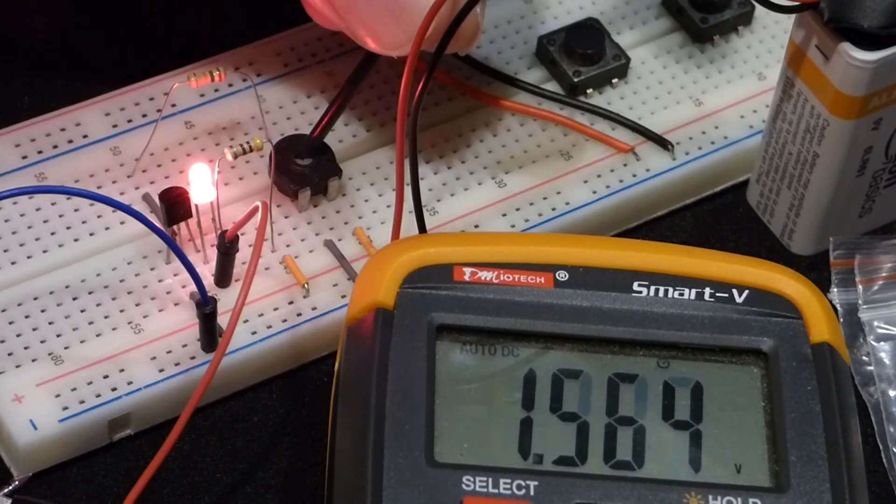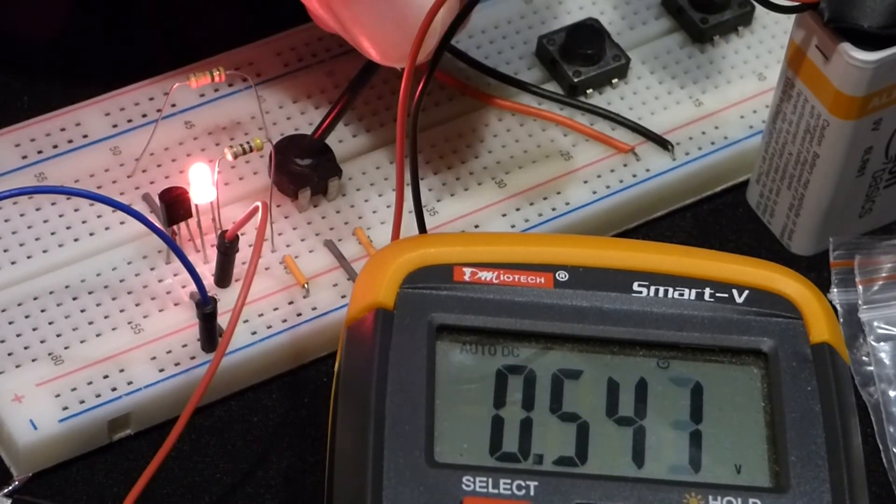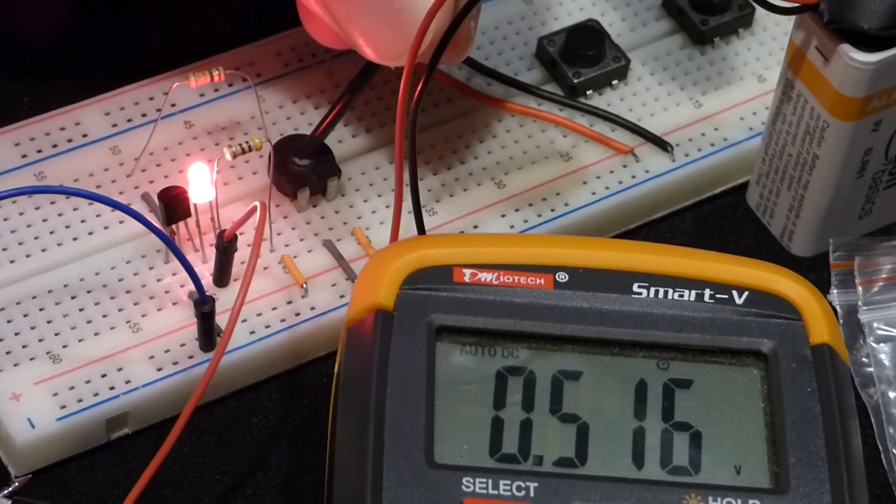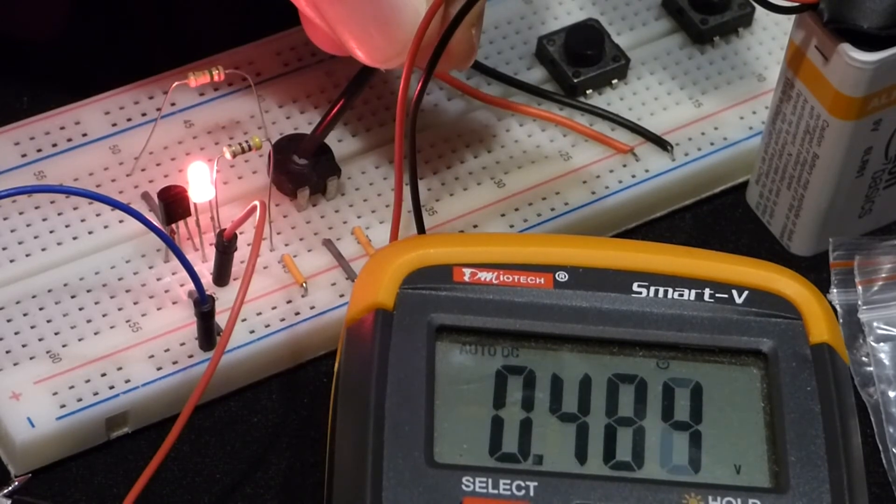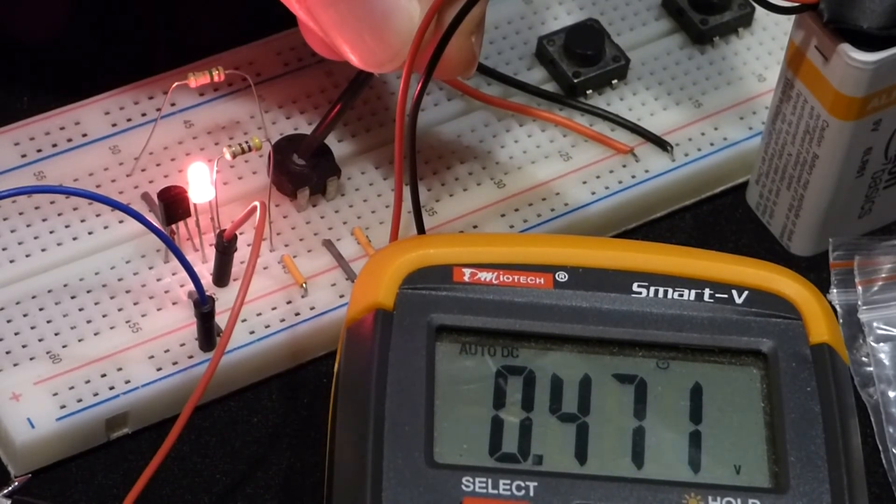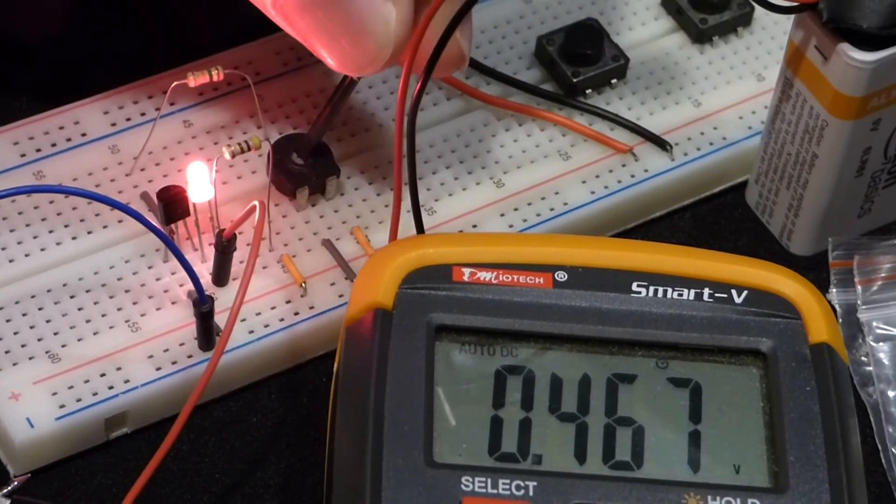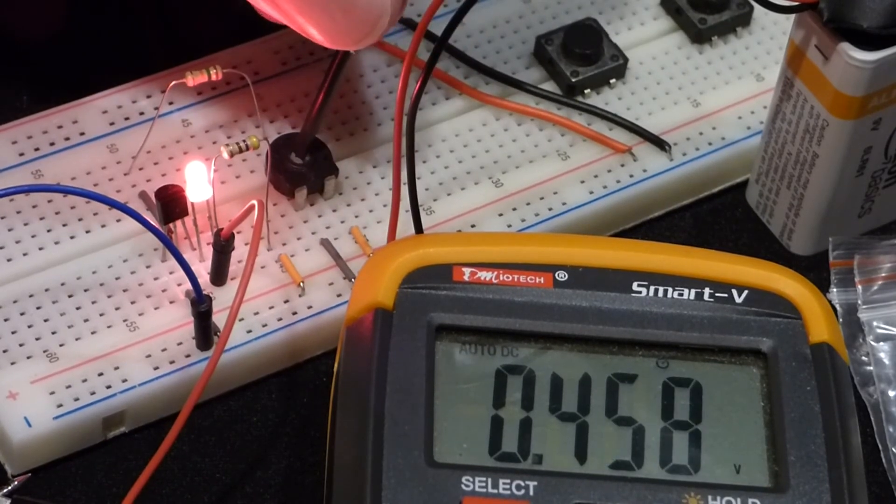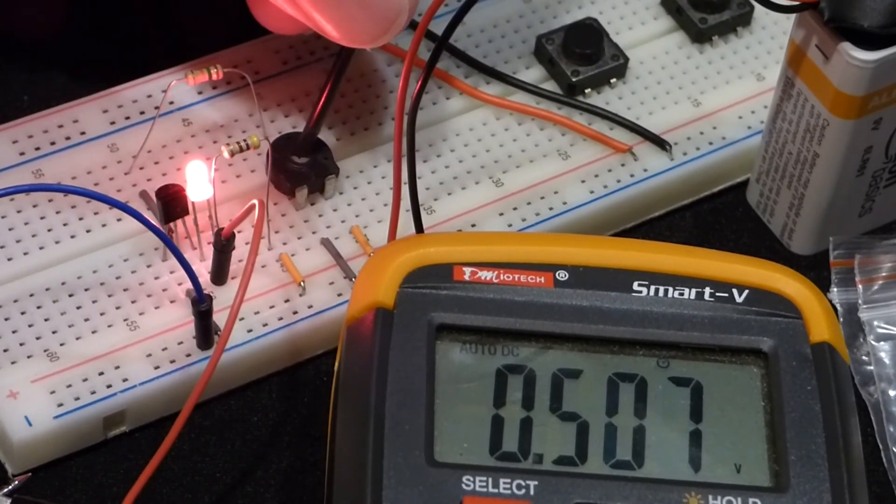And you see when I get to about a third of the way, to about half of the way. Right now I keep letting more and more current to the base. That's permitting more current to flow from collector to emitter.